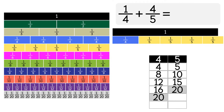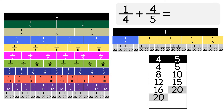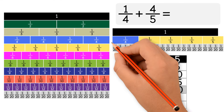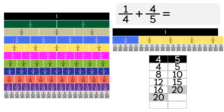So we'll be using the fraction strips with 20 as the denominator. 5 strips of 1 over 20 fit under 1 fourth. 4 strips of 1 over 20 fit under each 1 fifth. Now we add up all of the strips of 1 over 20 together — we have 21 strips of 1 over 20. So 1 fourth plus 4 fifths equals 21 over 20. As you can see, our sum is greater than 1. We can rewrite it as 1 and 1 over 20.